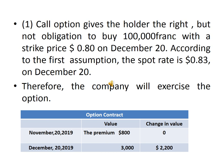According to the first assumption, the spot rate is $0.83 on December 20. Therefore, the company will exercise the option because it can purchase 100,000 francs at the strike price of $0.80 while the market price is $0.83. The value of the option contract on November 20 is the premium of $800, increasing to $3,000 by December 20, reflecting a gain of $2,200.